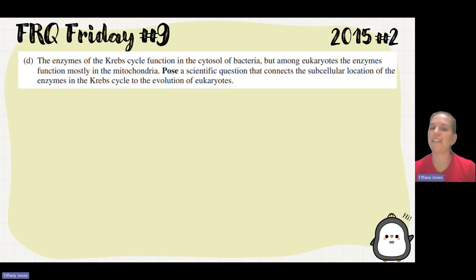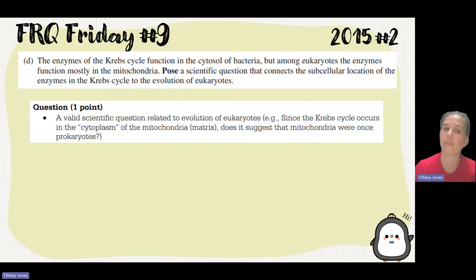The last part is proposing a scientific question. This is an old exam question, so this isn't actually still in the standards where we have to pose these questions, but it's still a good application. The enzymes of the Krebs cycle function in the cytosol of bacteria, but among the eukaryotes, the enzymes function mostly in the mitochondria. Propose a question that connects the subcellular location of the enzyme of the Krebs cycle to the evolution of eukaryotes. You need to come up with some type of question that connected to the evolution of eukaryotes. Since the Krebs cycle occurs in the cytoplasm of the mitochondria, does it suggest the mitochondria were once prokaryotes?